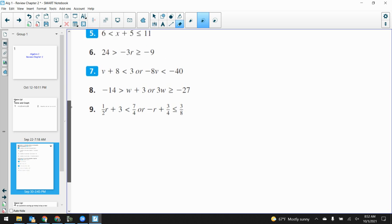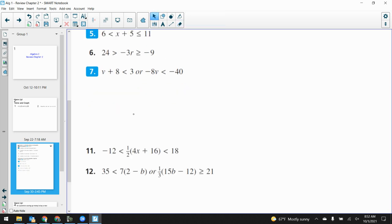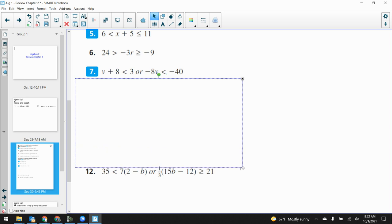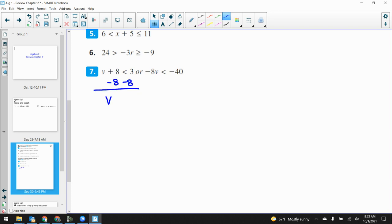All right. Let's take a look at number seven. All right. Number seven here. Again, this is an or inequality. I see that because it literally says the word or in the middle of this thing. So what does that tell me? That tells me I just solved these two inequalities separately. So I would subtract the eight from both sides. V is less than negative five. I would divide by negative eight.